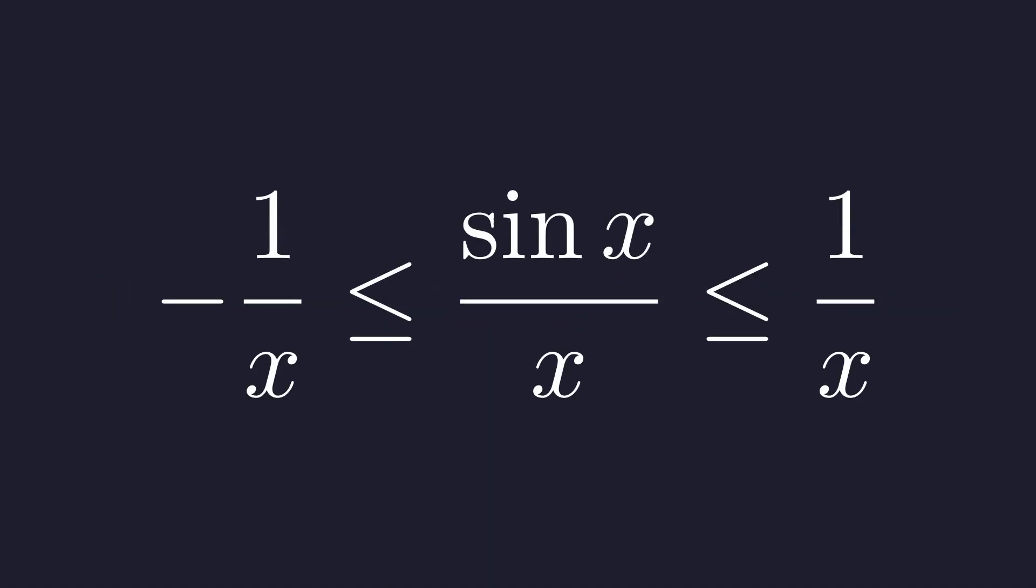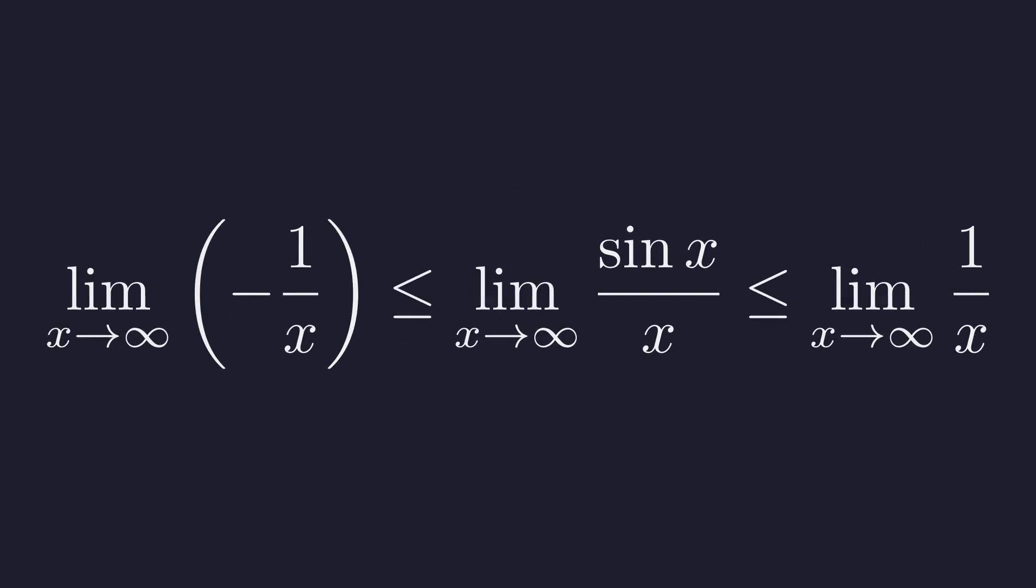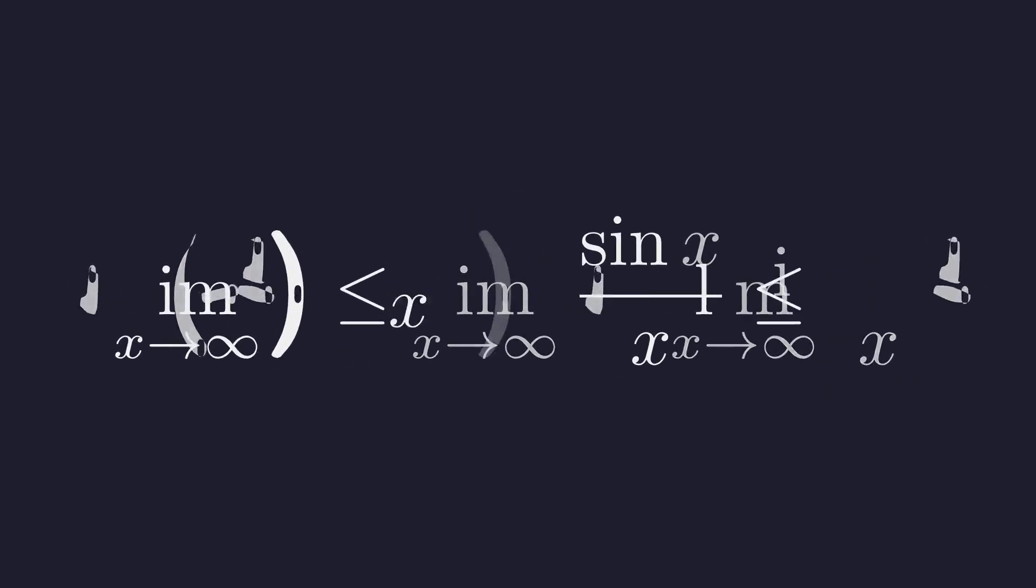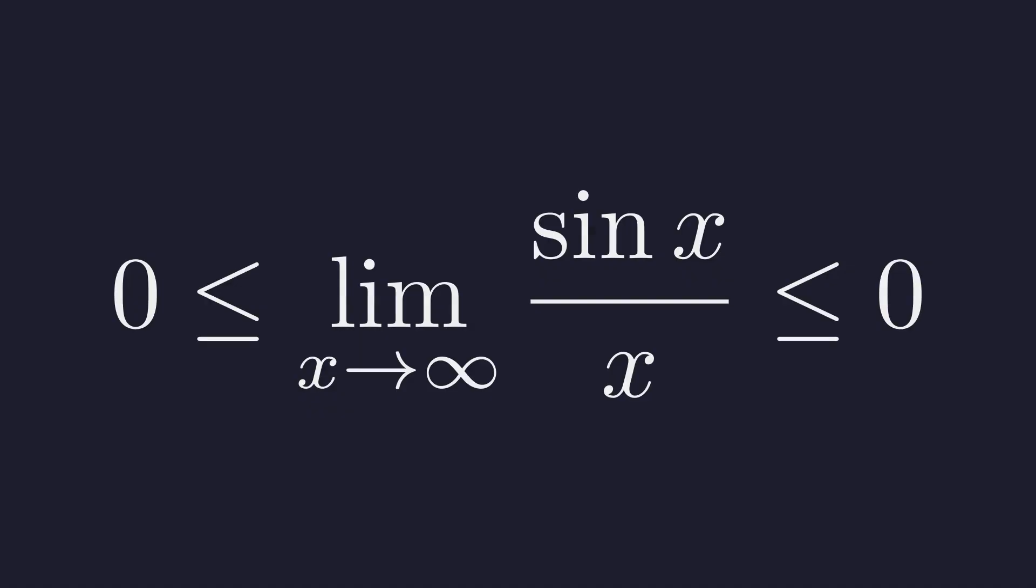We start again with our established inequality. Now we apply the limit as x approaches infinity to all three parts of the inequality. We just calculated the limits of the outer two parts. Substituting their values, we get this remarkable result.